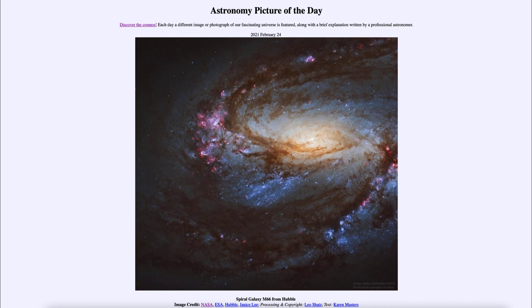So that was our picture of the day for February the 24th of 2021. It was titled Spiral Galaxy M66 from Hubble. We'll be back again tomorrow for the next picture. So until then, have a great day, everyone, and I will see you in class.